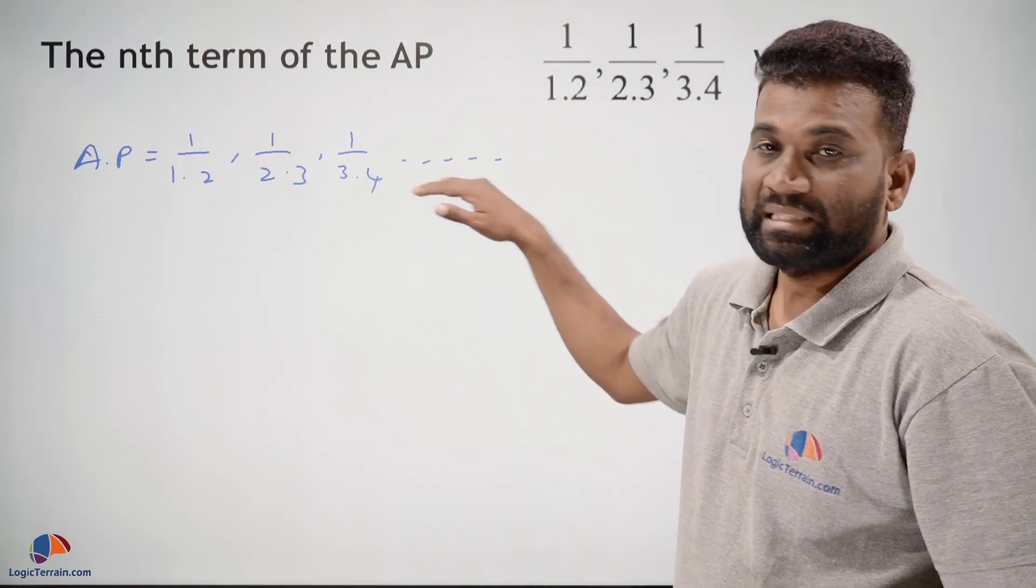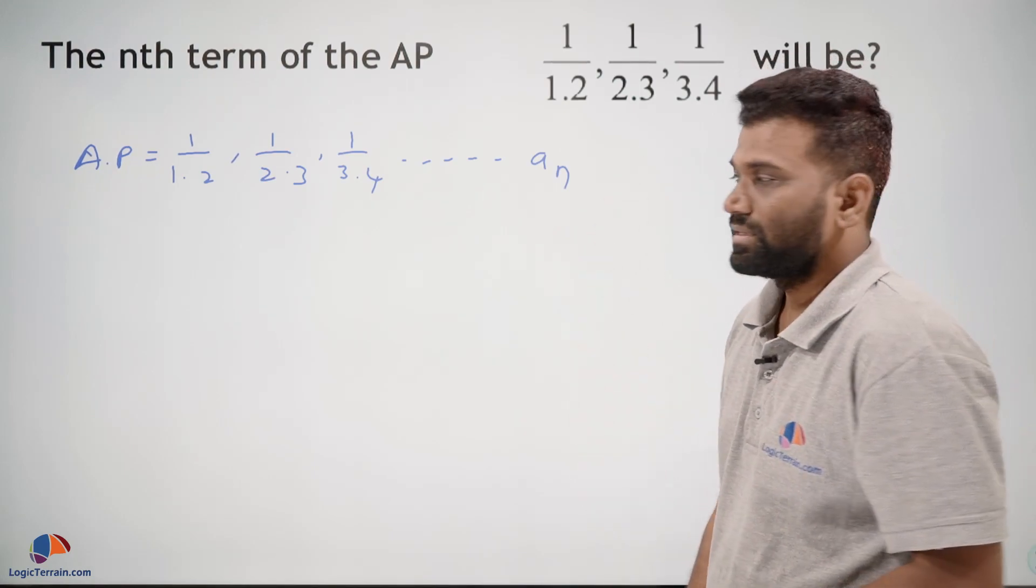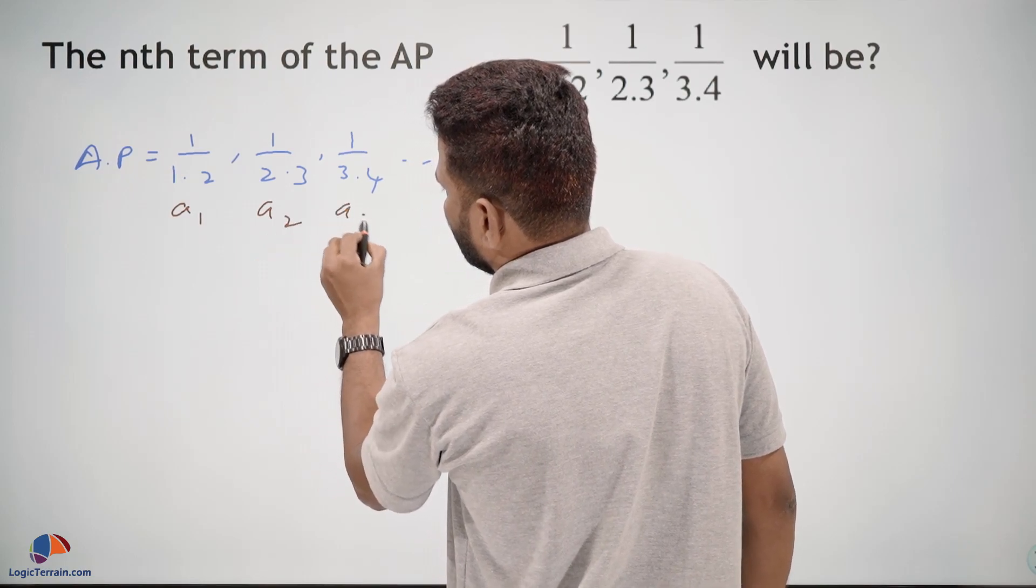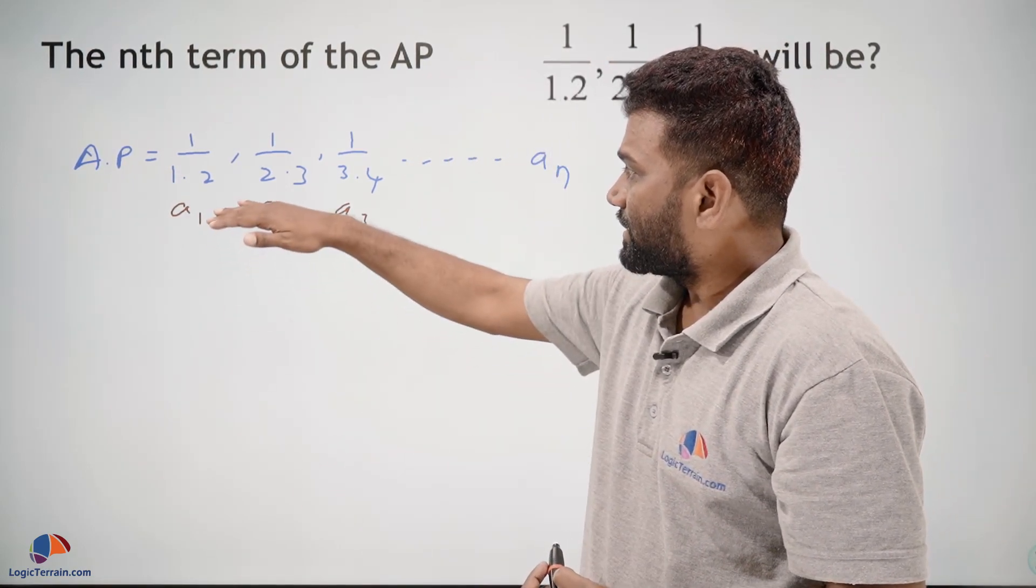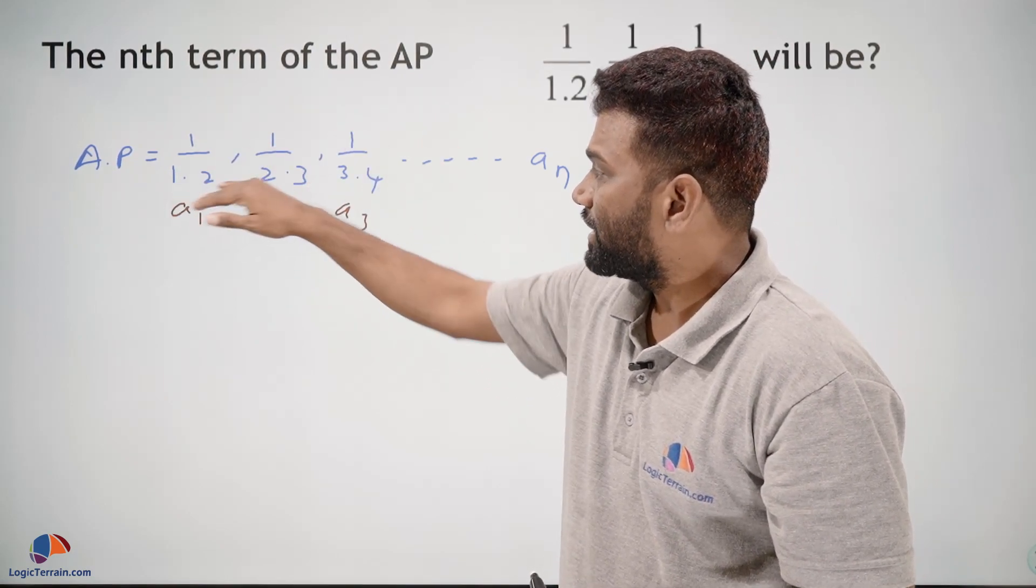In this sequence we need to find the nth term, that is a_n. Here we have first term, second term, third term. We need to find the nth term. You can clearly observe the numerator is the same, but the denominator...